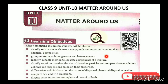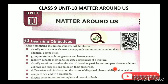In this lesson on Matter Around Us, the learning objectives are: classify substances as elements, compounds, and mixtures based on their chemical composition; group mixtures as homogeneous and heterogeneous; identify suitable methods to separate components of a mixture; classify solutions based on the size of solute particles; and compare true solutions, colloids, and suspensions based on their properties.